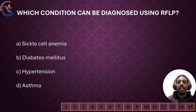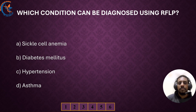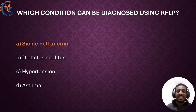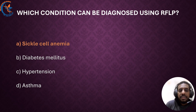Which condition can be diagnosed using RFLP? The correct answer is sickle cell anemia. The other conditions listed are not typically diagnosed via RFLP.